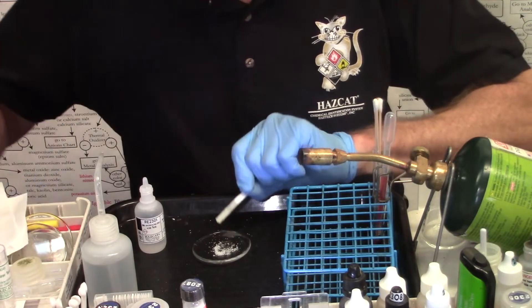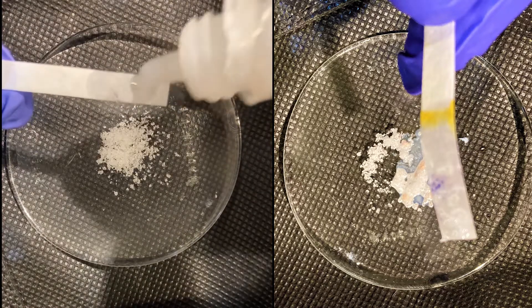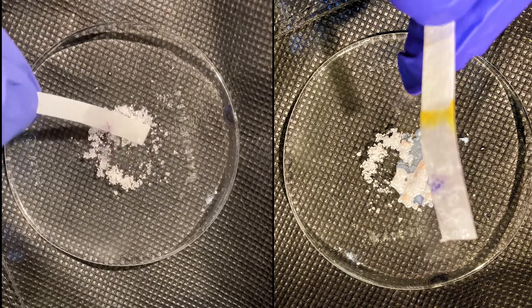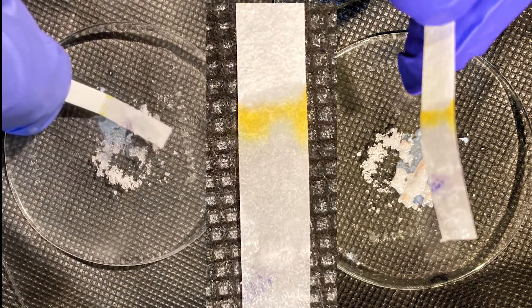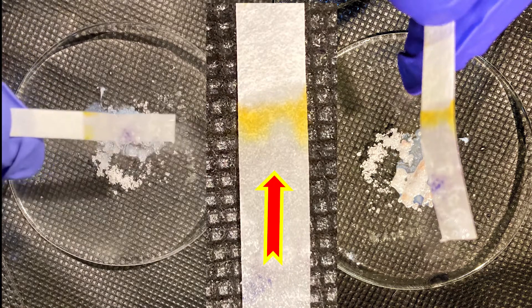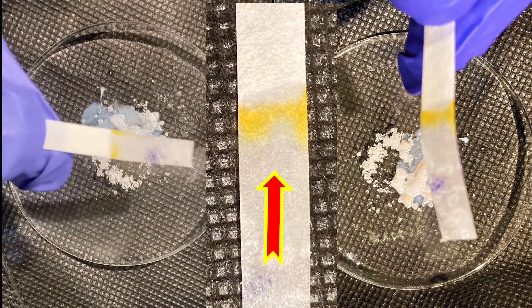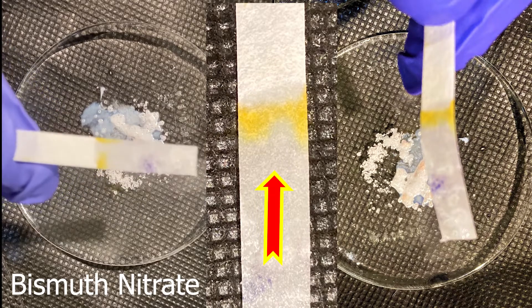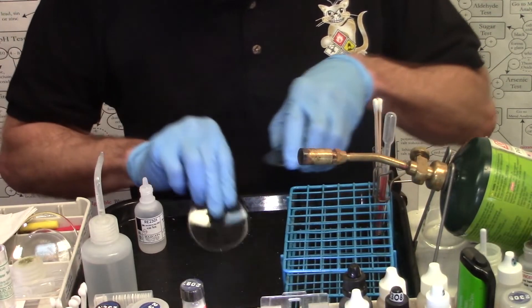Now if I examine the paper very closely, I can see that it has some little yellow spots on it where the unknown came in contact with the oxidizer test strip where the crystals of the white solid came in contact. So that's not a positive oxidizer. But that yellow is an important observation. This substance was bismuth nitrate. Let's try another one.